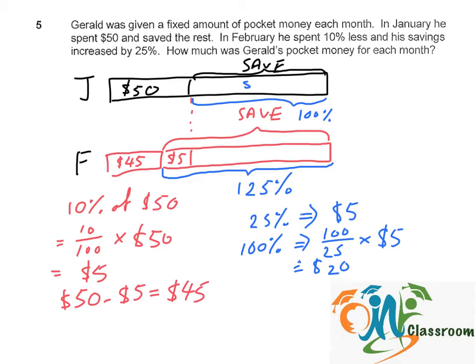So if his savings are $20, his pocket money for each month would be $50 plus $20, which equals $70.